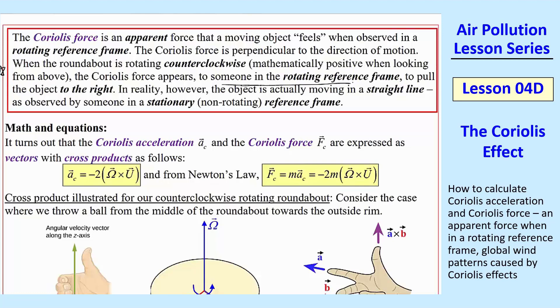the object is actually moving in a straight line, but that would be in the case of someone in a stationary reference frame, non-rotating. If you're rotating, it seems to veer to the right.